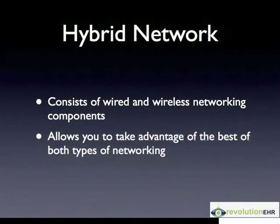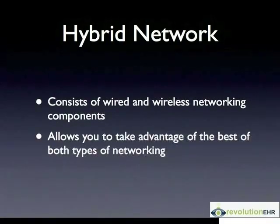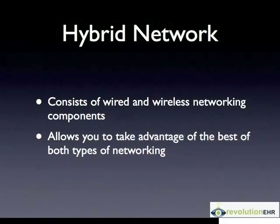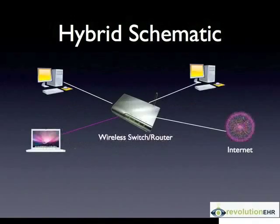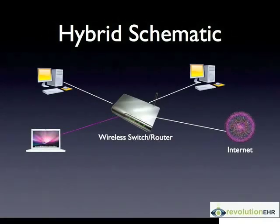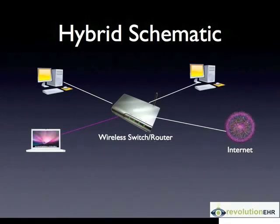You can use a hybrid network, which has both wired and wireless networking components together. I use this in my office, and it really allows you to take advantage of the best of both worlds. In situations where you can't get a hardwired connection run, you can still have a computer where you want it, and in rooms you're configuring you can drop hardwires to get the fastest speeds, the most security, and the fewest headaches. This is an example of a hybrid scheme — typically a laptop with the dashed magenta line shows the wireless connection.